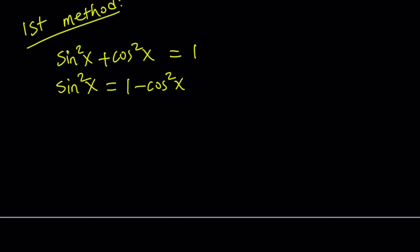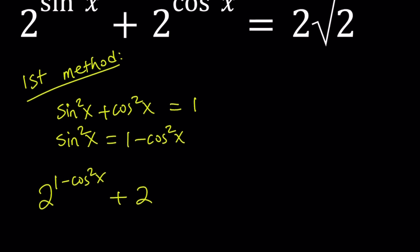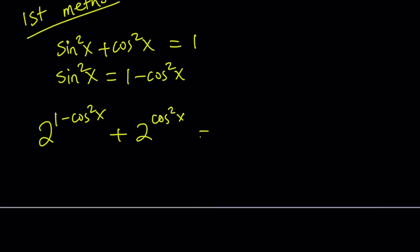And then it's going to give me the following: 2 to the power 1 minus cosine squared x plus 2 to the power cosine squared x equals 2 root 2. Now, when you see two exponents being subtracted, you should almost all the time think about a quotient. Why? Because a to the power m minus n can always be written as a to the power m divided by a to the power n. So when you have the exponents being subtracted, you can write as a quotient, or if you are dividing powers with the same base, then you are subtracting the exponents.